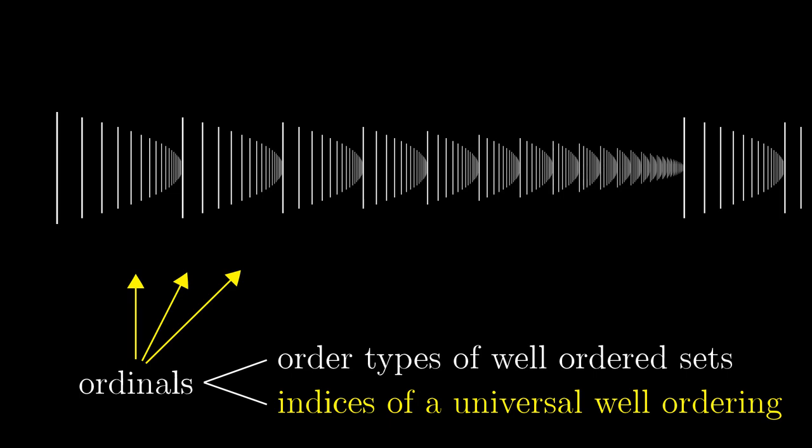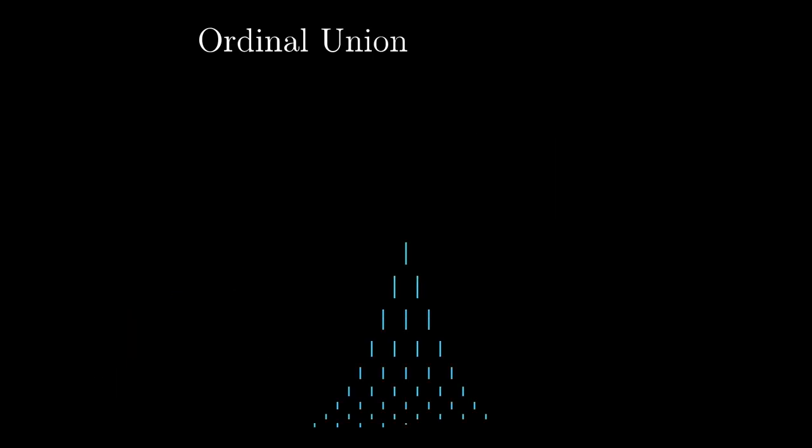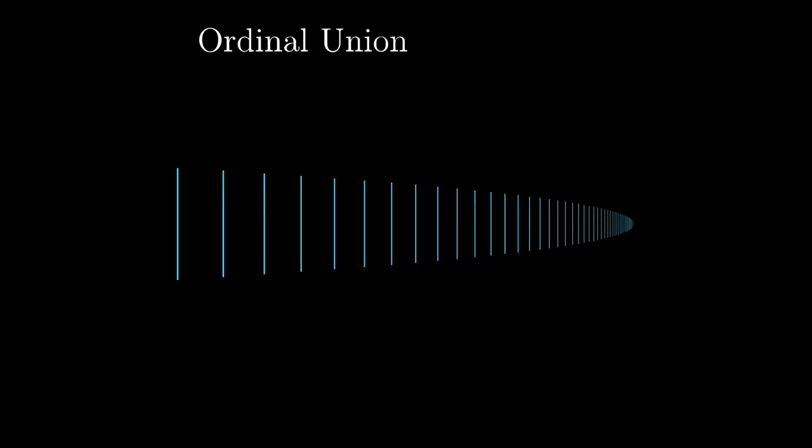At the end of the video, let's look at the ordinal union operation from the perspective of indices. It is the operation that takes several ordinals, aligns them to the left and merges them. In indices, this corresponds to the so-called supremum.